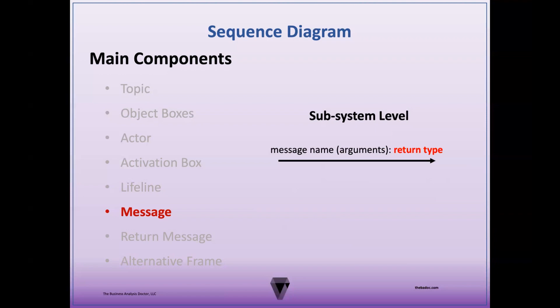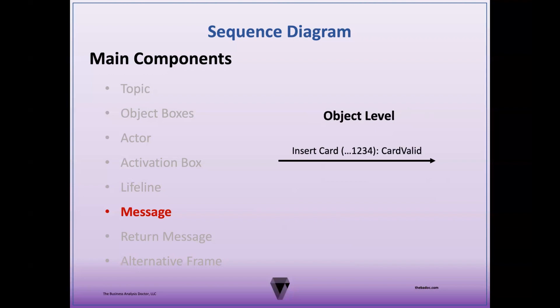Another optional notation is the return type. Return types refer to the kind of response or information that the sender expects to receive back from the receiver after the message is processed — it represents the output of the operation. In some cases, the return type could be a specific value or it might be void, meaning no specific value is returned. For a message named insert card with an argument of card info, the return type could be a validation status indicating whether or not the card is valid. For the object level, the argument might include the card number, while the return type would indicate if the card was valid or invalid.